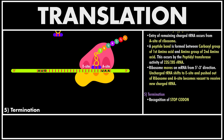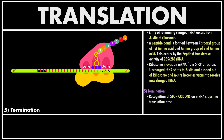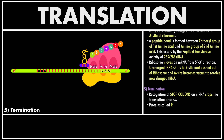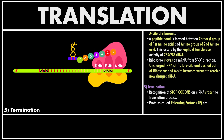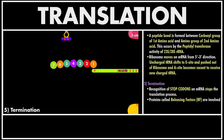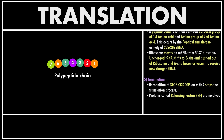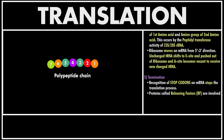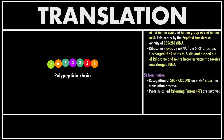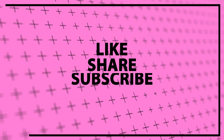Encounter of a stop codon stops the translation process. The ribosome-mRNA complex dissociates due to certain proteins called release factors, and the polypeptide chain is released. This polypeptide chain undergoes certain modifications during post-translational modifications and is involved in the formation of complex proteins, enzymes, hormones, etc. So that is all for this video — make sure you subscribe to this channel for more upcoming videos.